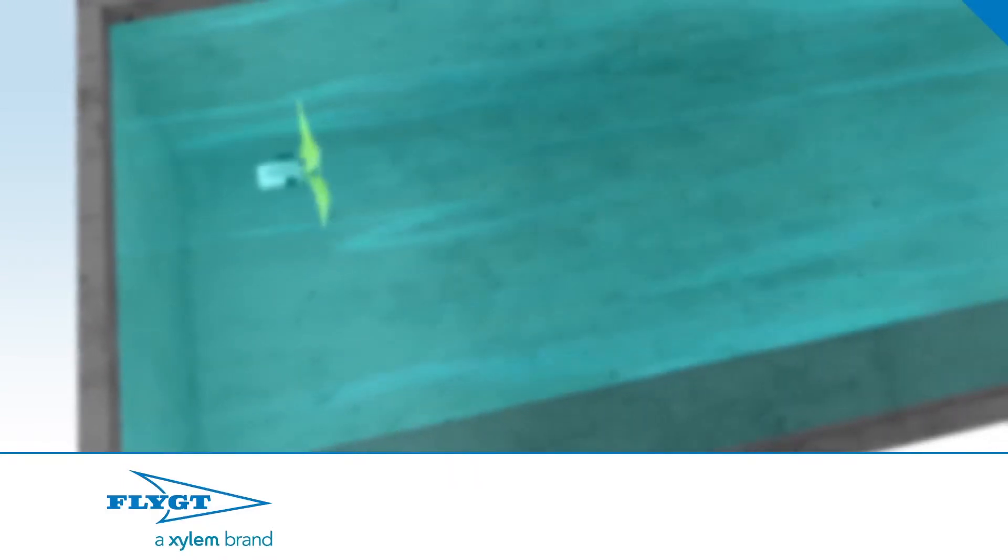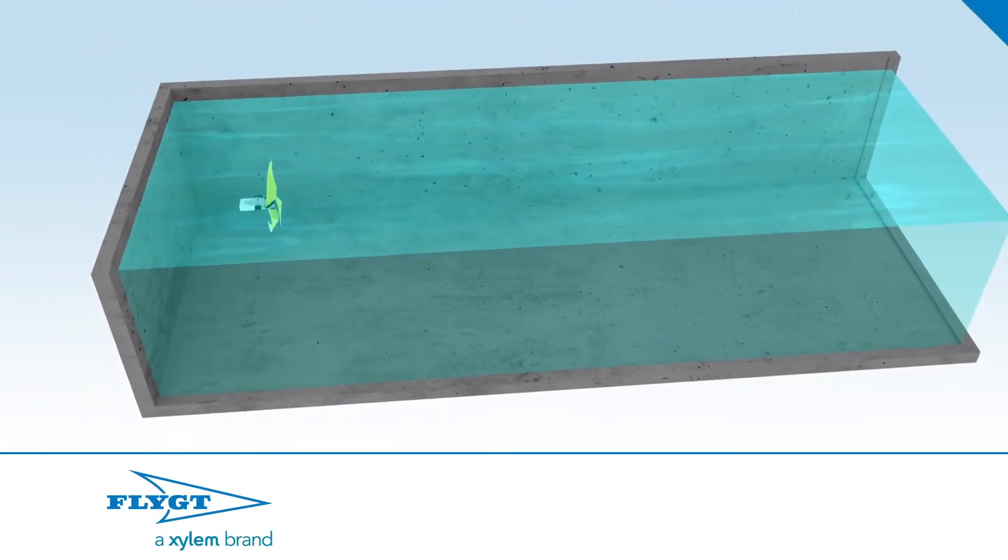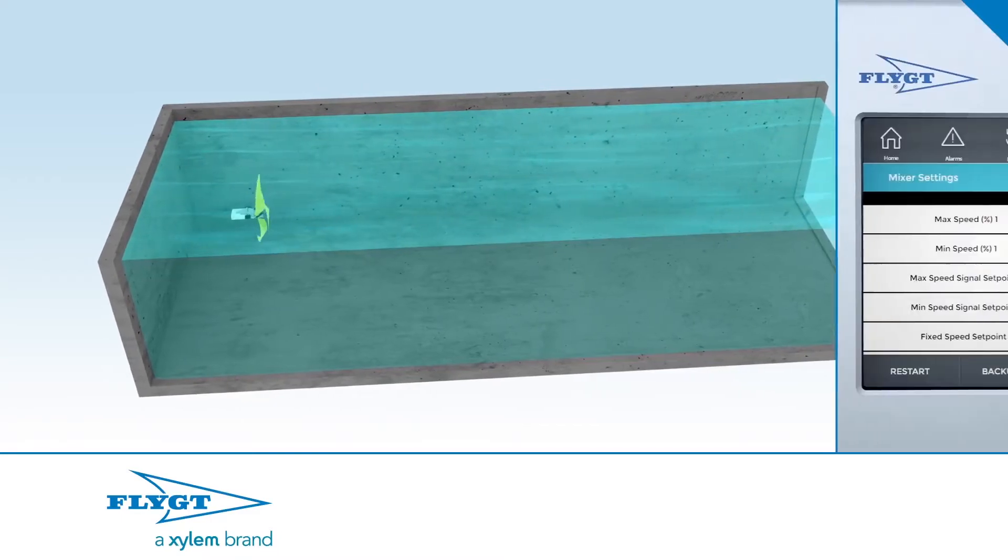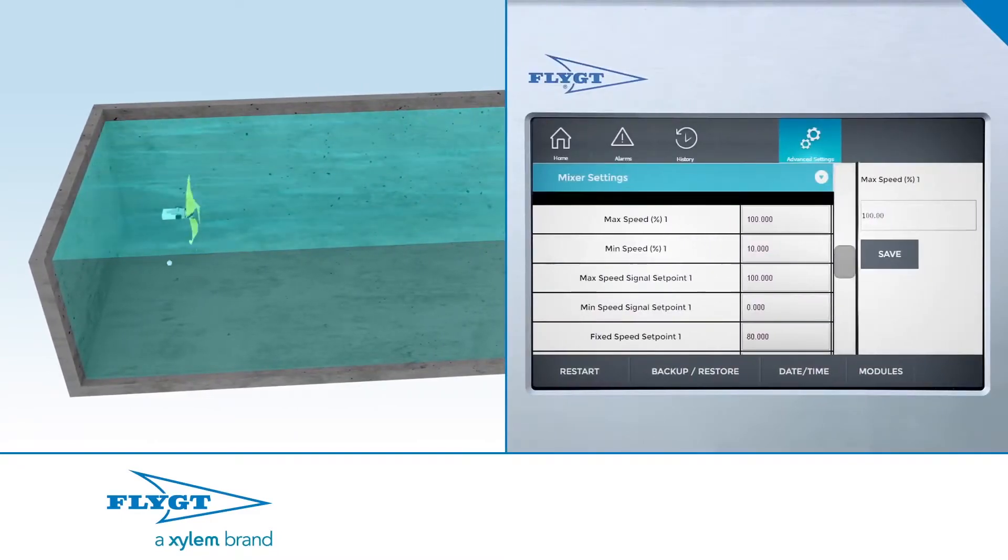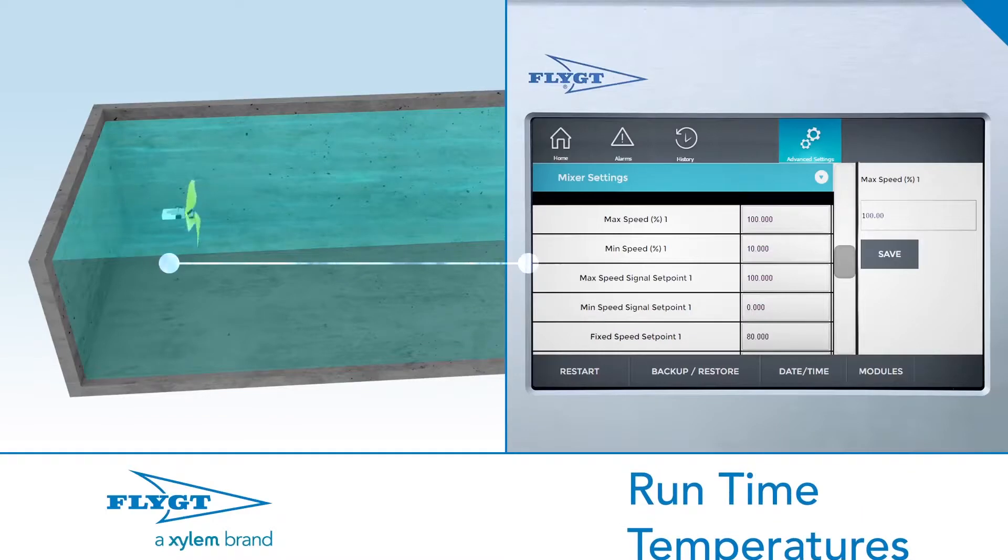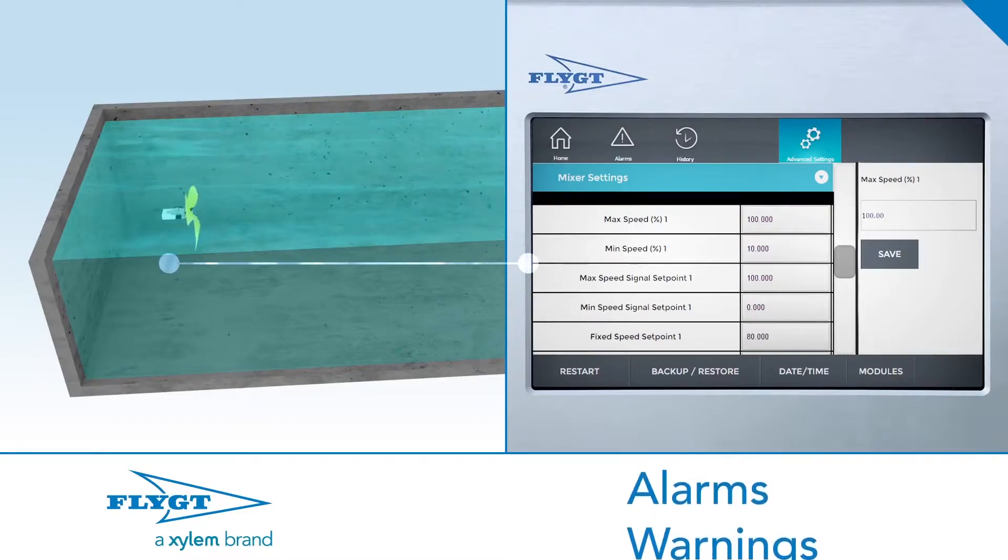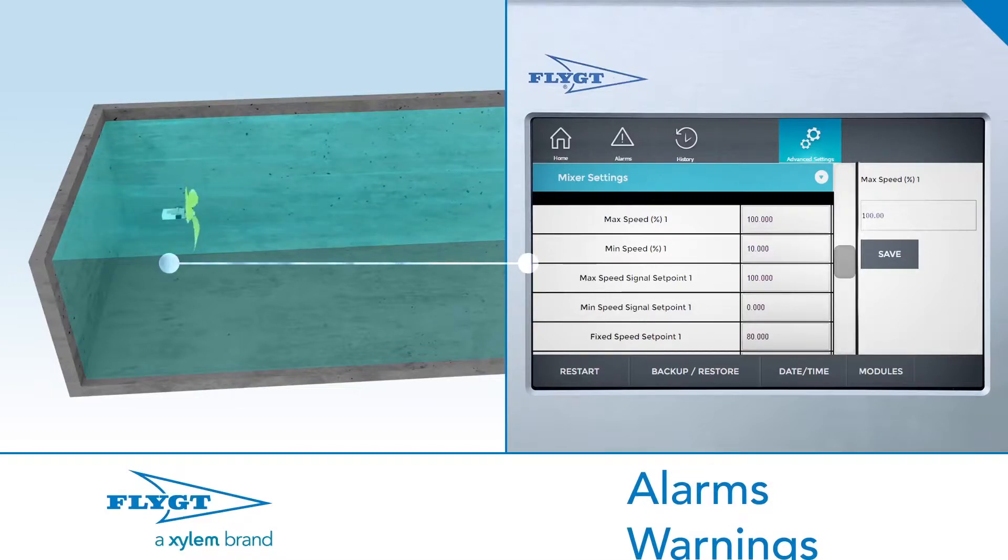Variable speed mixers have other advantages as well. For example, the Flight 4320 is equipped with advanced communications, so you know what is happening below the surface. The 4320 knows its speed, power consumption, temperatures, run time, and more. And it communicates this information, along with any warnings or alarms, continuously via a variety of connected devices utilizing Modbus and other protocols.